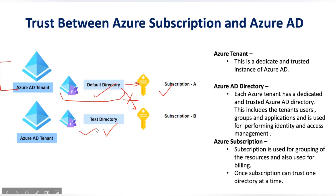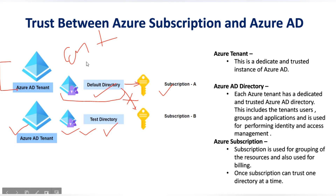So why do we have multiple tenants or multiple directories? For example, if one organization has multiple sub-organizations and wants to segregate their users, they create another tenant and another directory. Suppose we have a tenant called contoso.com — one Azure tenant. Next we have another organization called contoso-test, and for that domain we create another tenant and directory.